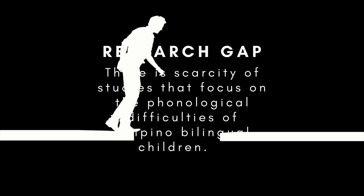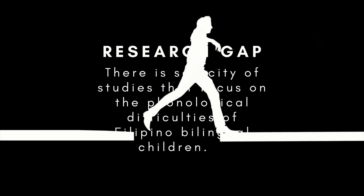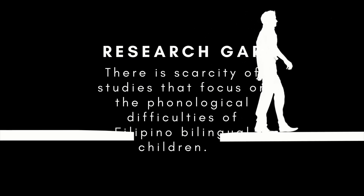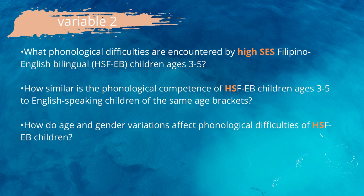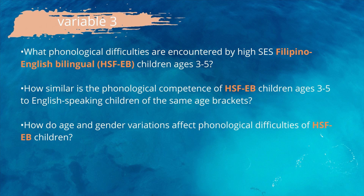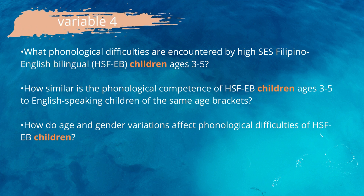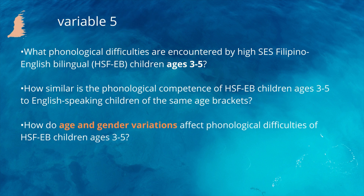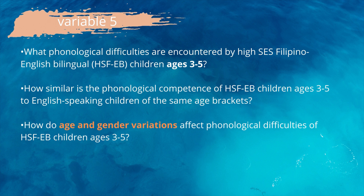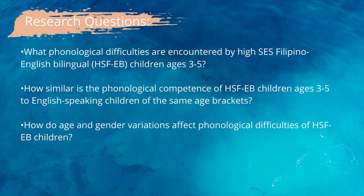Coming from the research gap, you can now write your finalized research questions. The first variable is the research topic itself — phonological difficulties. Then specify other variables, such as those encountered by high SES Filipino-English bilingual children, specifically children ages 3 to 5. For the last research question, you can compare and contrast using age and gender variations. Now you have formulated a complete research question.